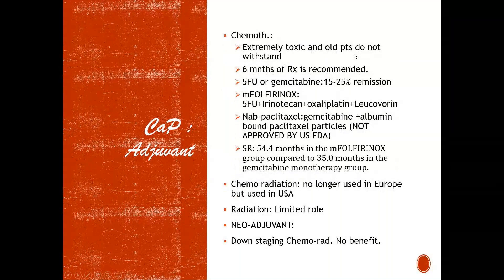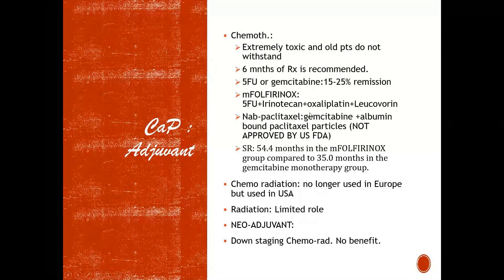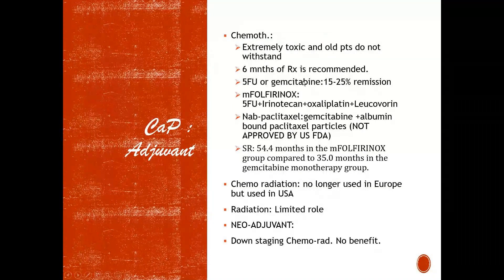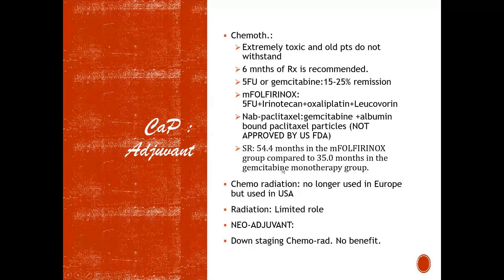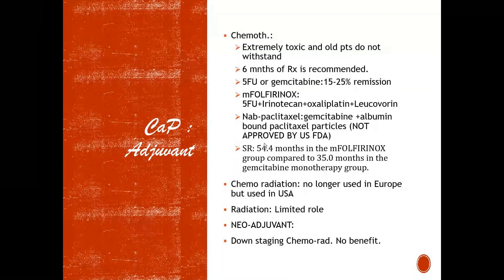Adjuvant chemotherapy is recommended for 6 months. 5-FU or gemcitabine are drugs of choice, with 15-25% remission rates. The FOLFIRINOX regimen shows improved survival of 54.4 months compared to 35 months with gemcitabine monotherapy — approximately 4-4.5 years — though chemotherapy is extremely toxic and older patients may not tolerate it. Neoadjuvant chemoradiation for downstaging has not shown significant benefit.